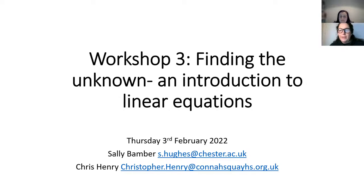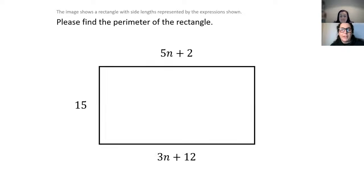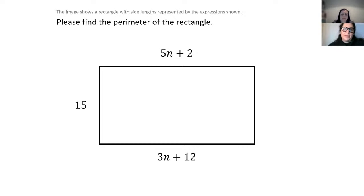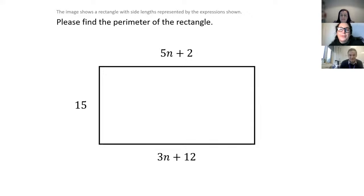Sean did send out a problem for people to look at before the session, though I appreciate you might not have had the opportunity. It says: please find the perimeter of the rectangle. Chris's year 11 students always knew whether I'd written the question or Chris, because I always put 'please' and he doesn't. We can see we've got the expressions 15, 3n plus 12, and 5n plus 2.